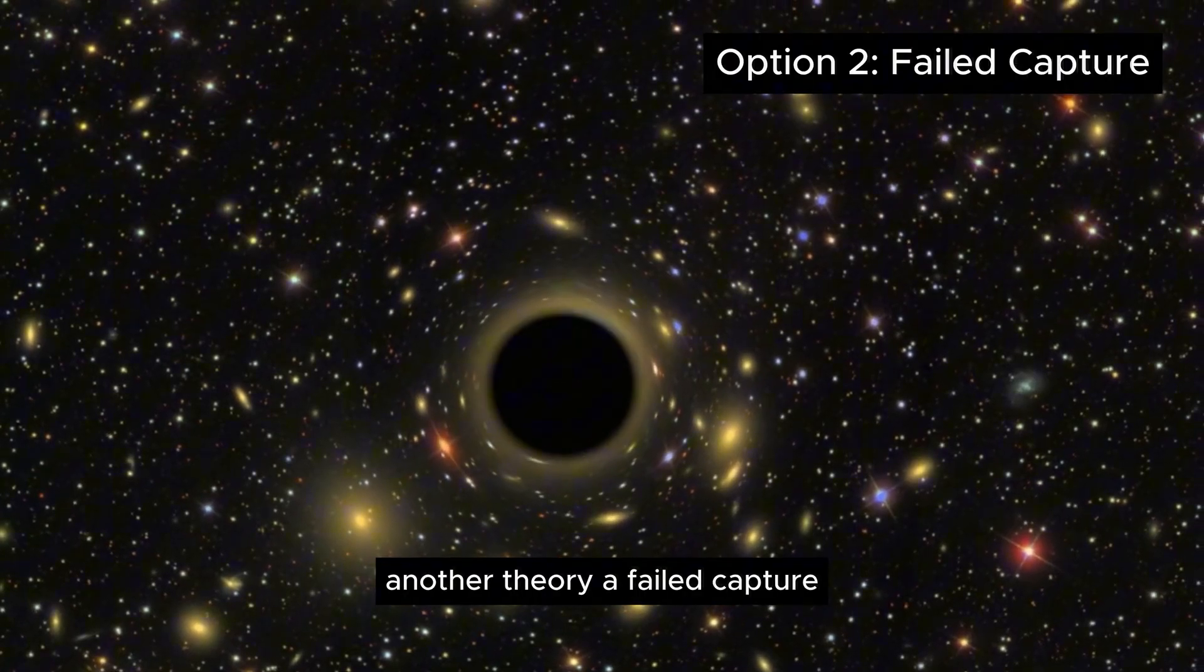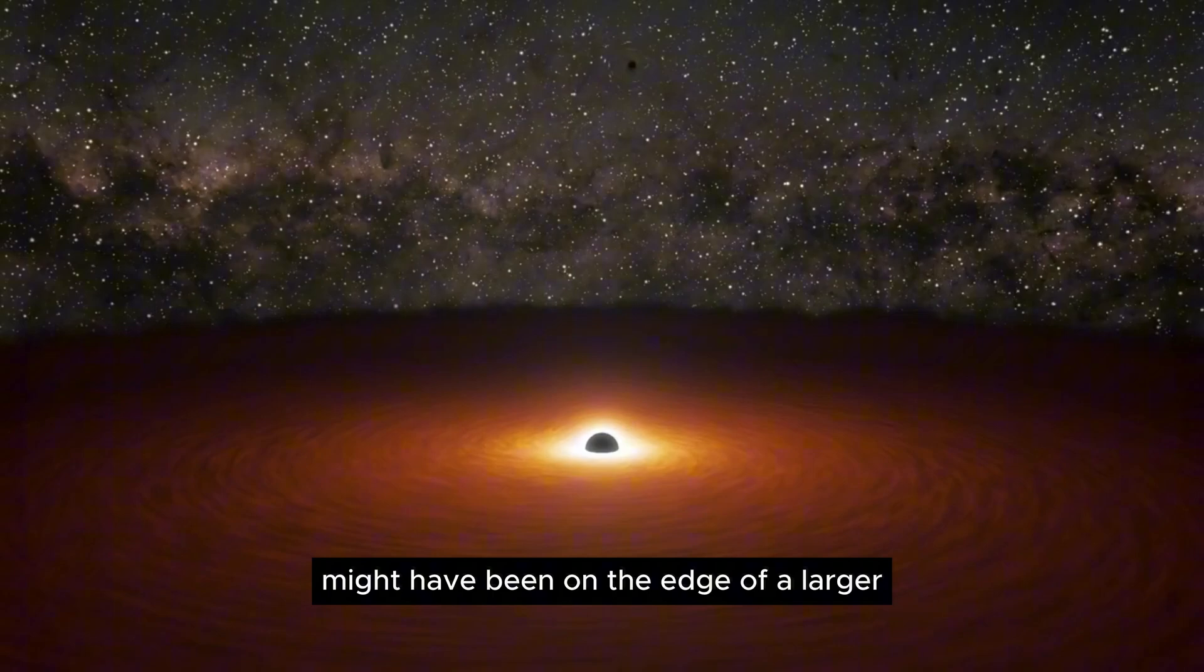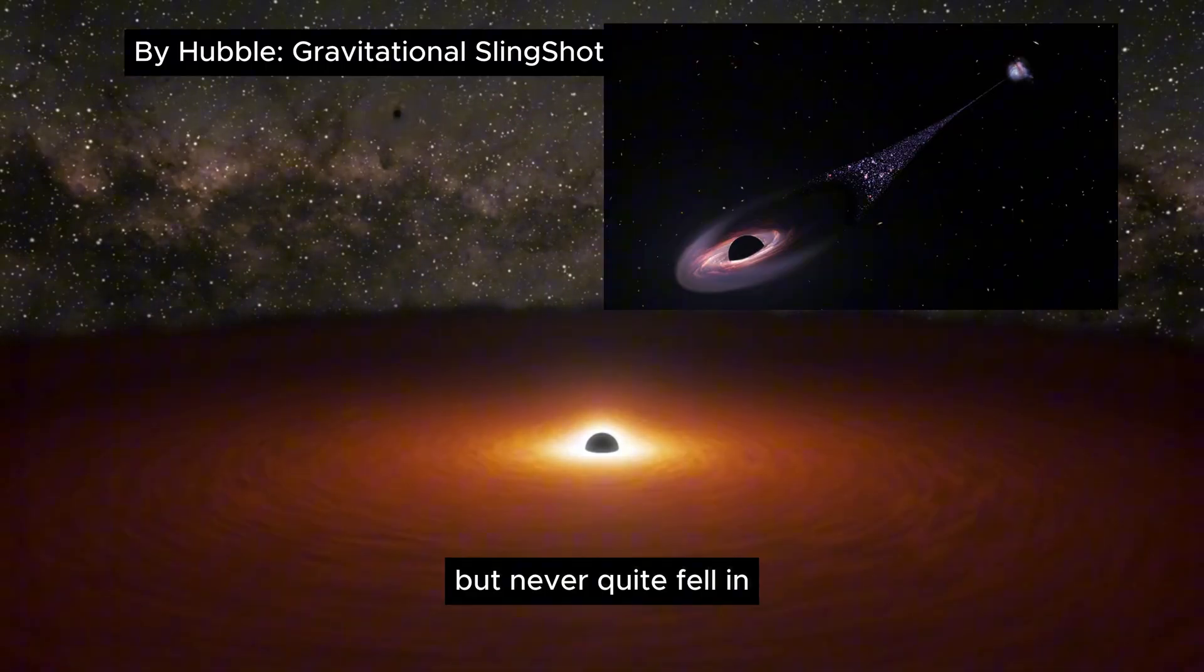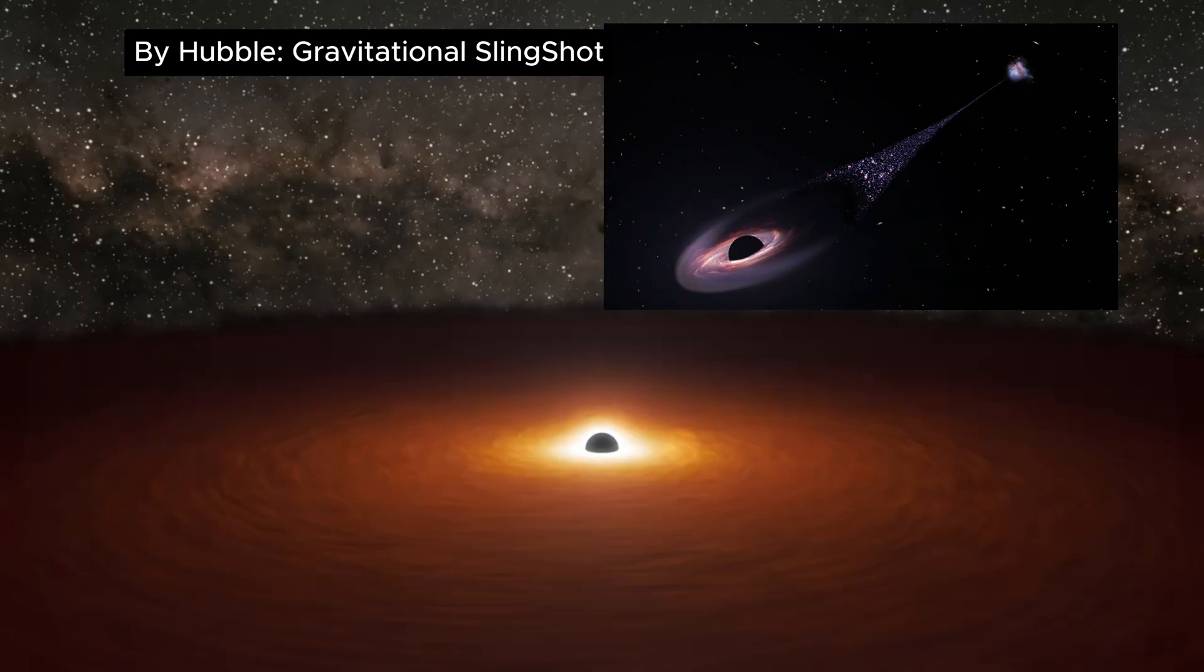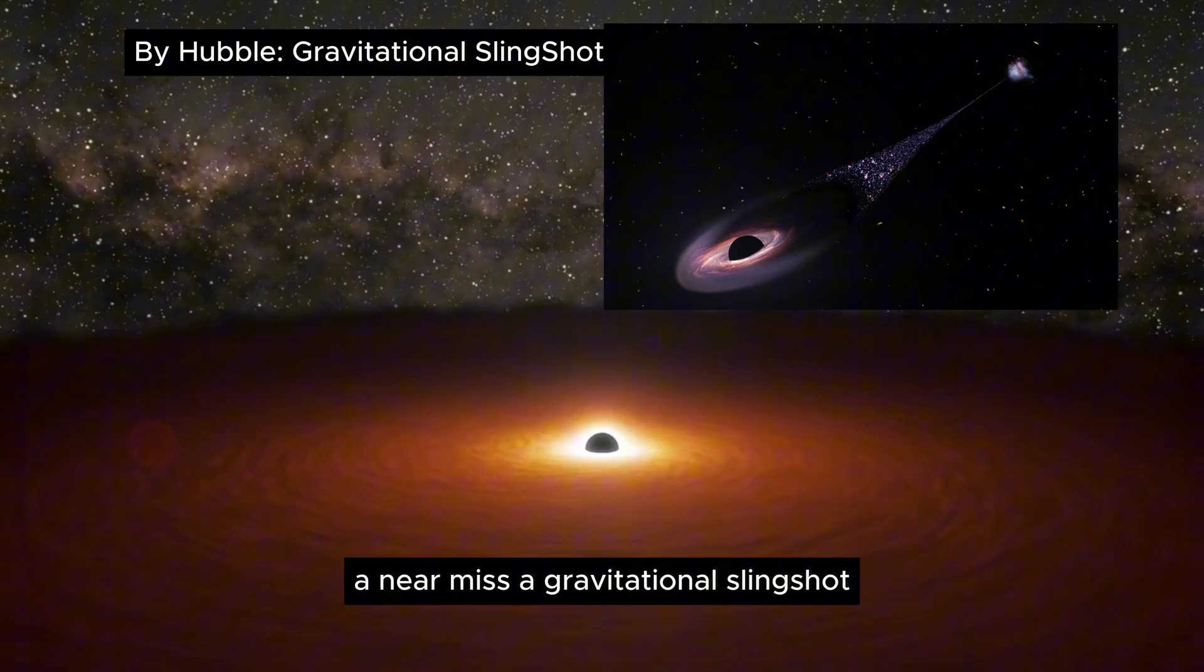Another theory? A failed capture. A smaller black hole might have been on the edge of a larger galaxy's gravitational pull, but never quite fell in. Instead, it kept orbiting until something knocked it loose. A near miss. A gravitational slingshot.